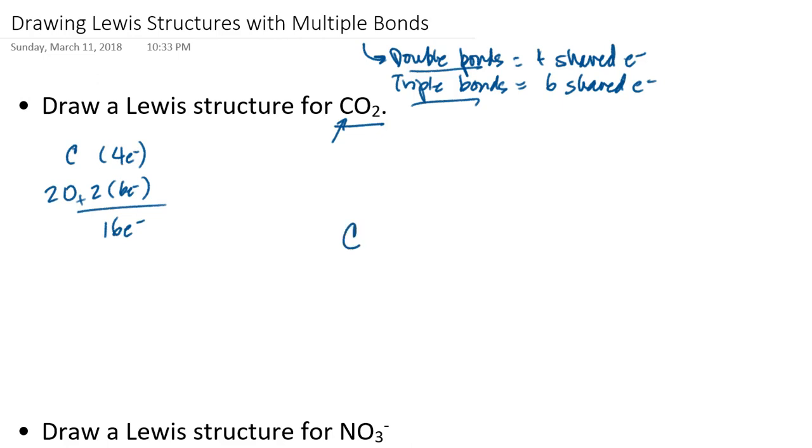I'm going to start putting the structure together by connecting the oxygens to the carbon which is the central atom. I've just used four electrons for the two single bonds connecting each of the oxygens to the carbon. That leaves me 12 electrons left to place. I would start with the outer atoms, so I'm going to start placing these electrons on the oxygens.